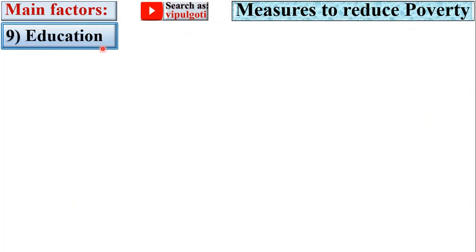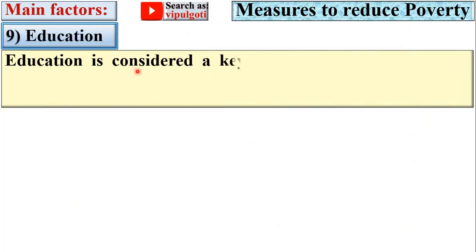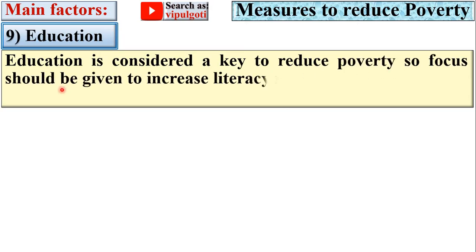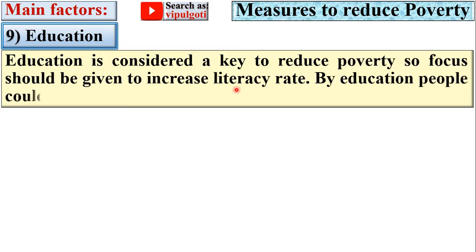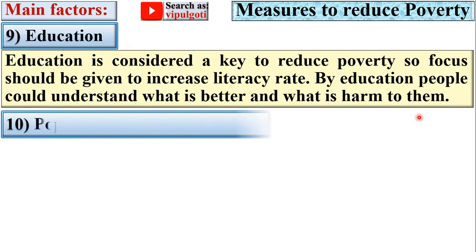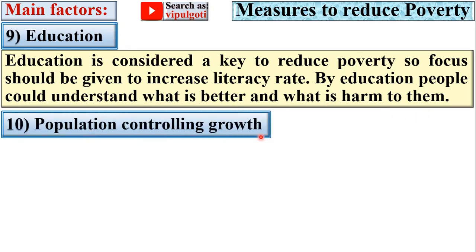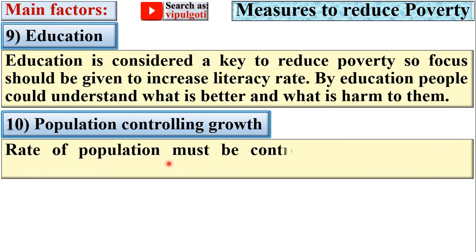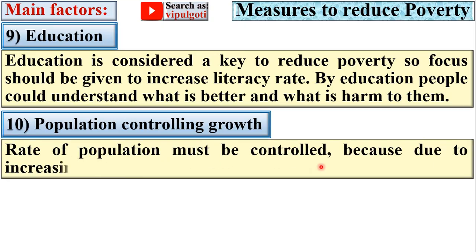Next, education. Education is considered a key to reducing poverty, so focus should be given to increasing the literacy rate. By education, people could understand what is better and what is harmful to them. Next, population growth controlling. The rate of population must be controlled because due to increasing population, the poverty rate increases.